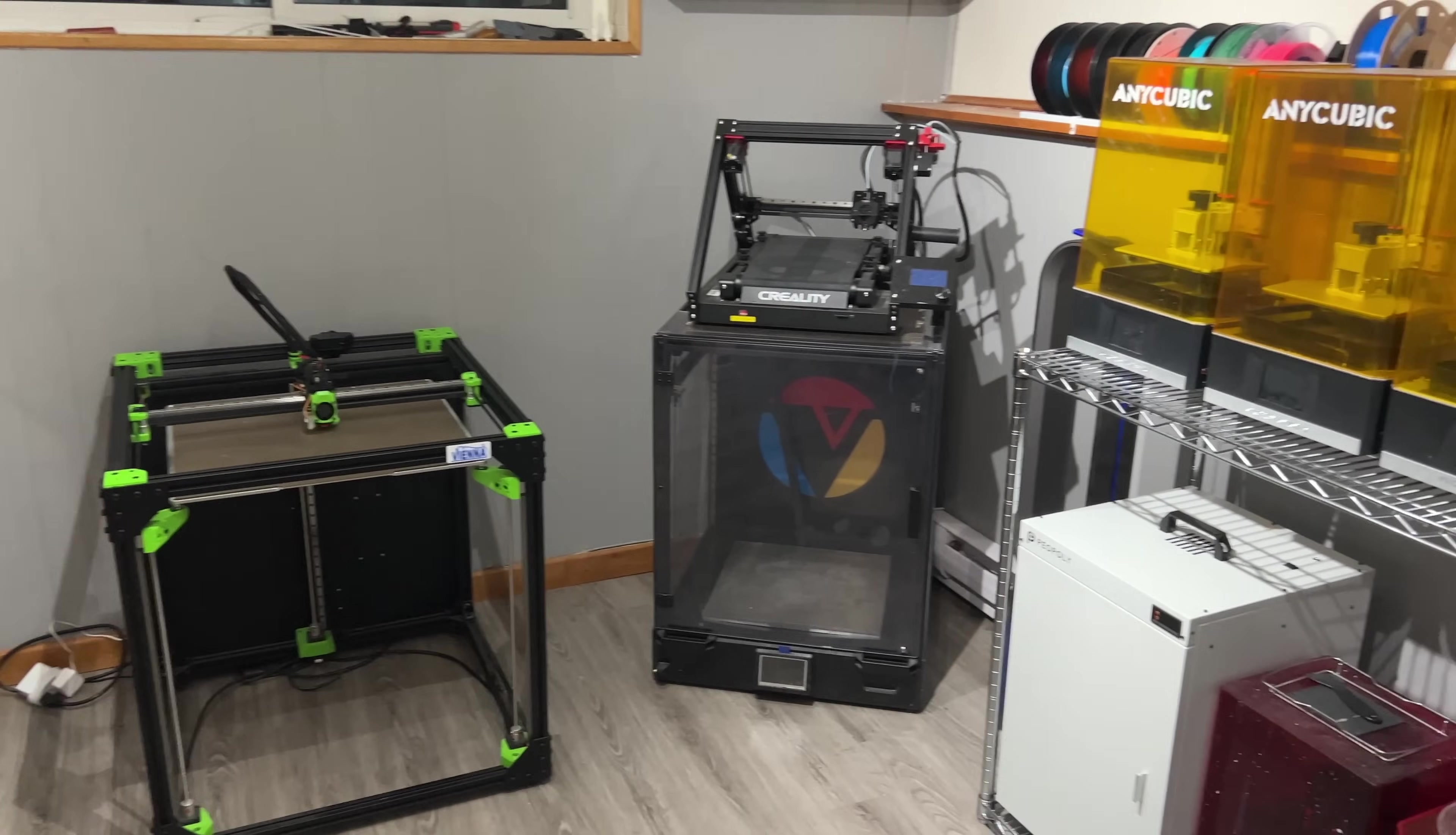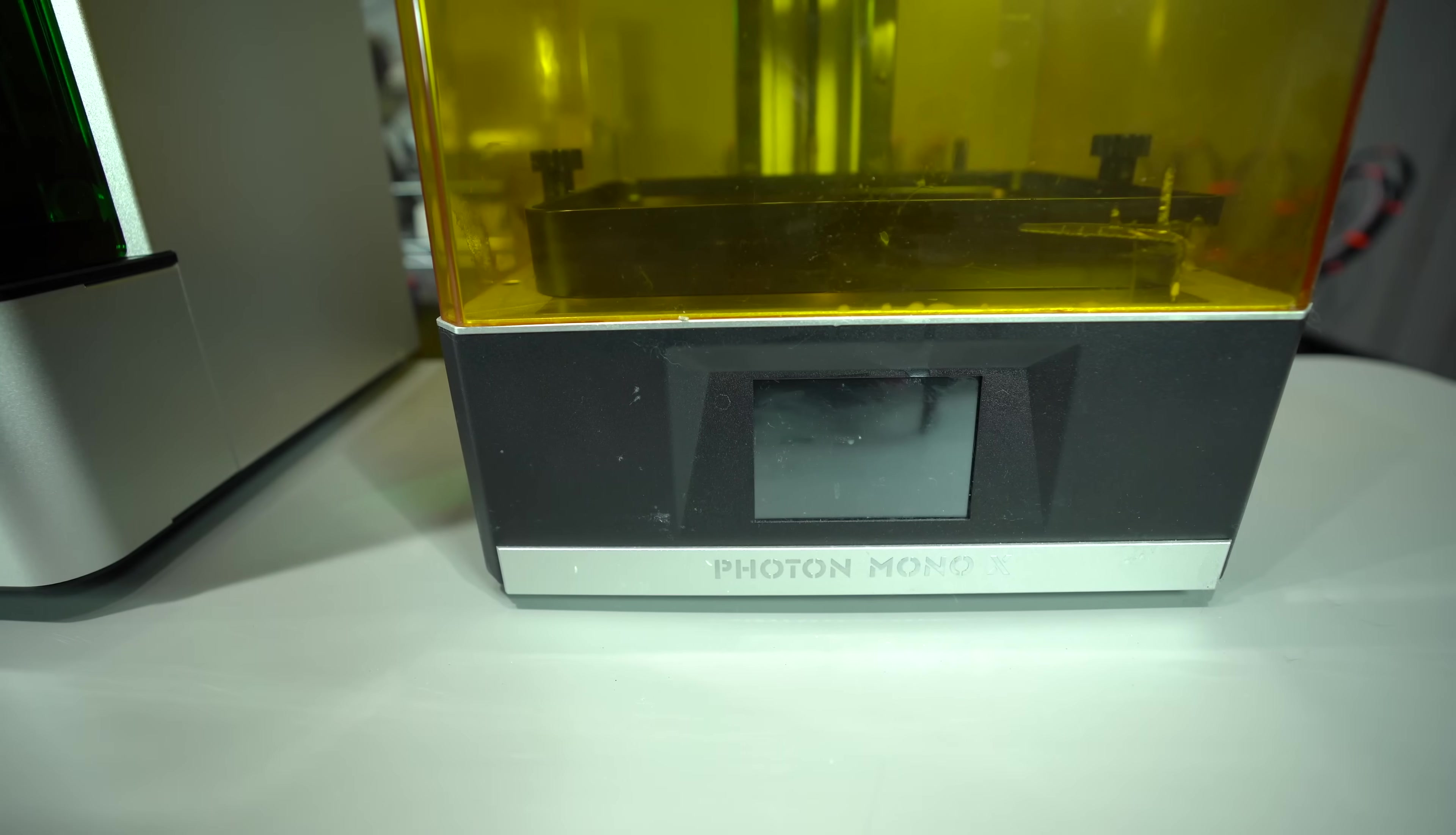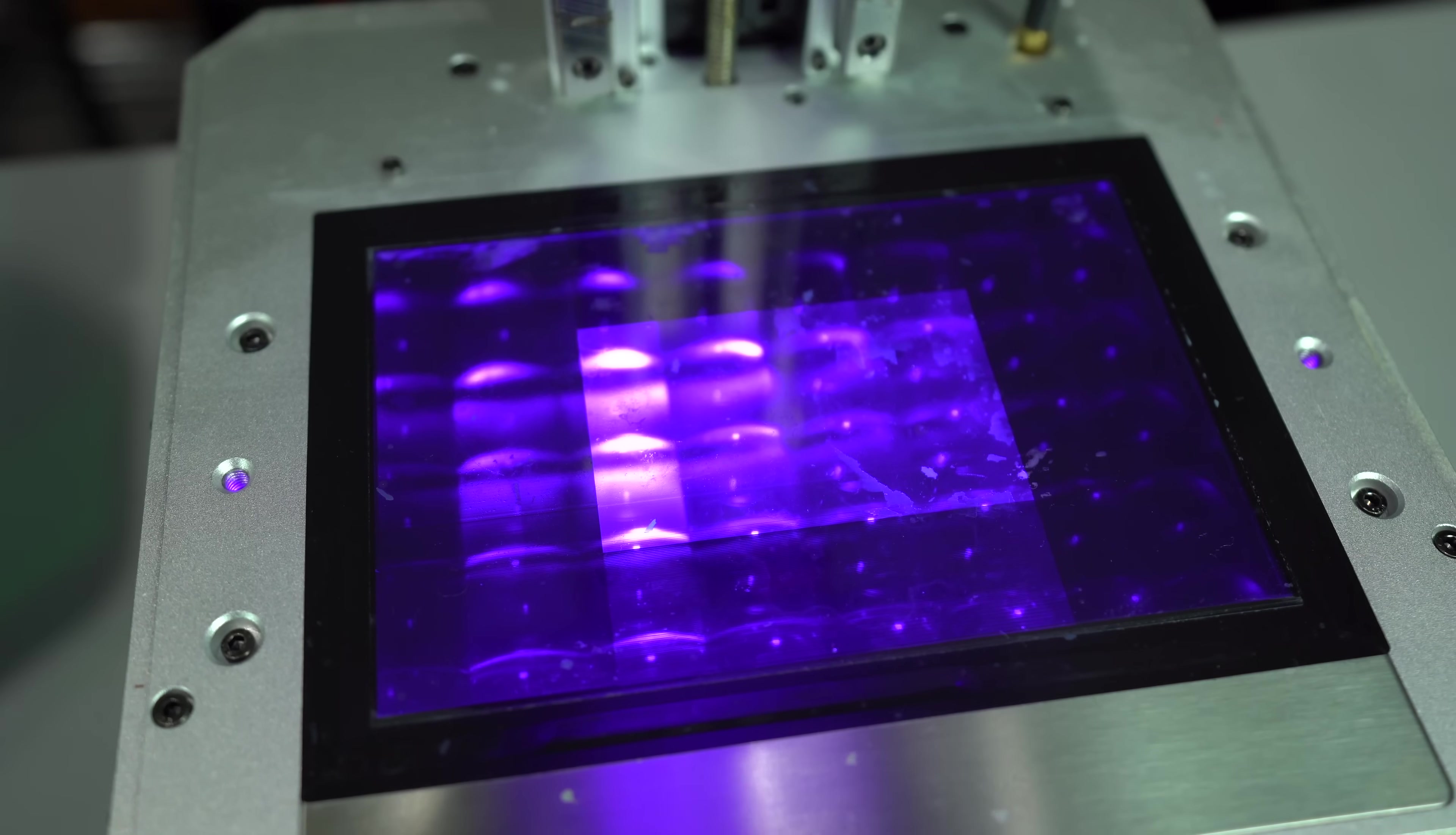I currently have three Anycubic Photon Mono Xs with dead screens. I managed to break all three in one print shop gone wrong. Yeah, it was a bad day. And because I know you're curious, I had the build plates too close to the screens. I had a thick first layer that applied too much pressure to the LCD, resulting in dead pixels.